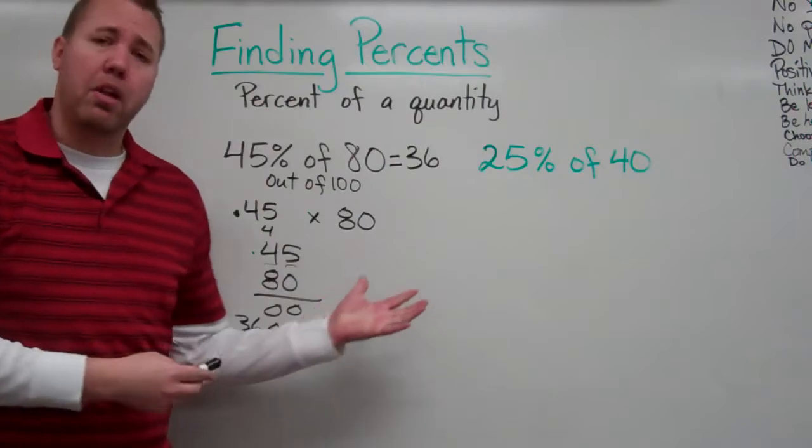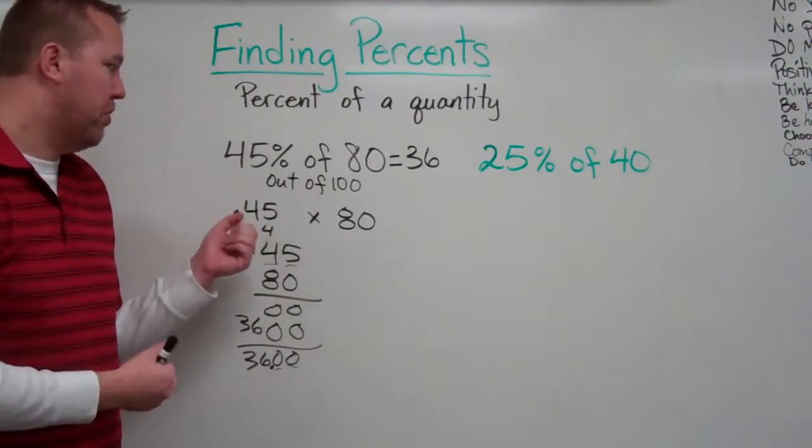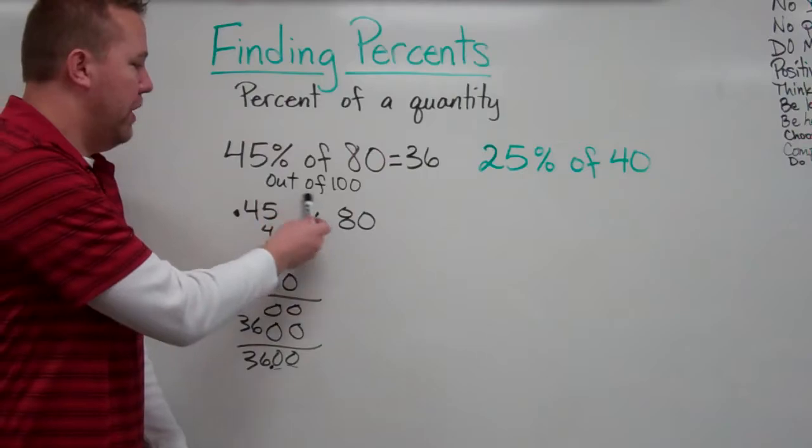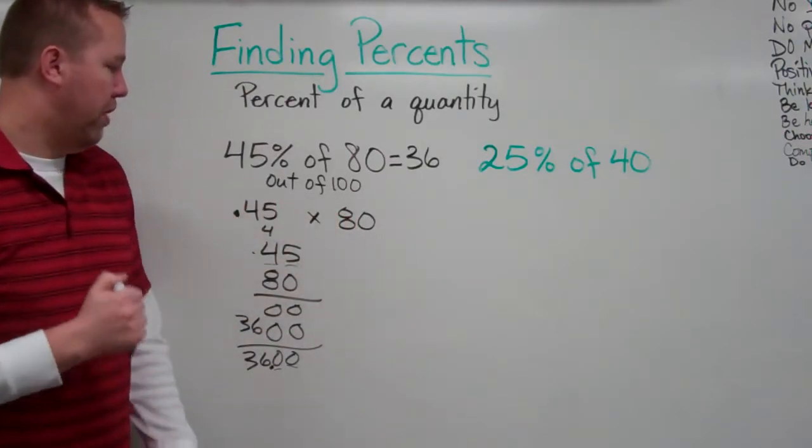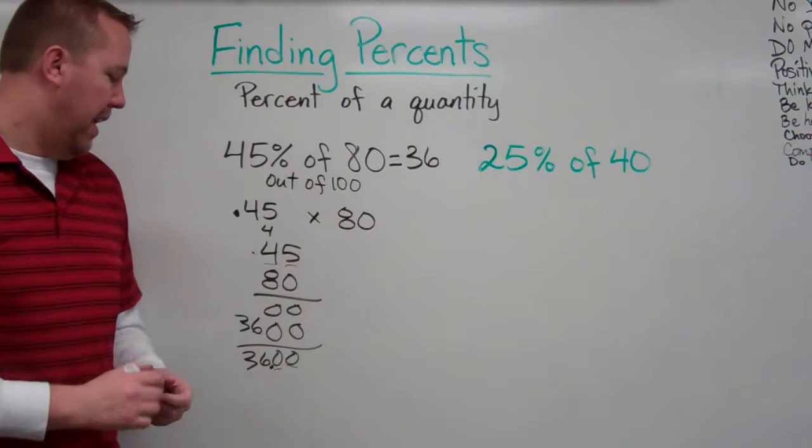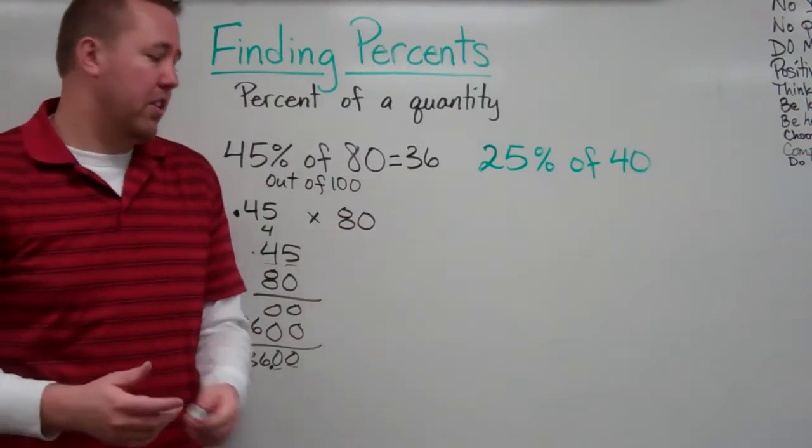So, 45% of 80 equals 36. This is a way that will always work. Multiplying with the decimals. Converting percent, knowing it's out of 100 to a decimal, .45. Multiplying that and that will get us the answer.